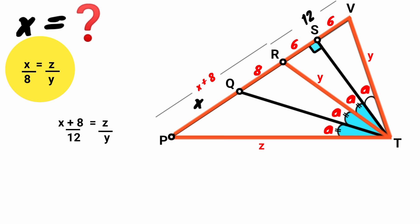Recall here x over 8 equals z over y. Replace this z over y with x over 8. So x plus 8 all over 12 equals x over 8.